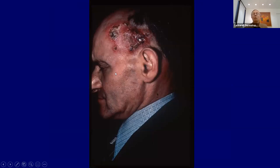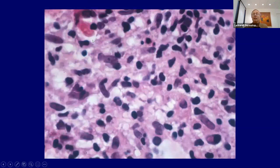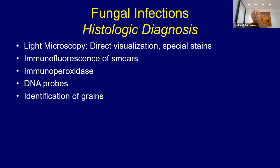Tertiary syphilis is not commonly seen. In some HIV-infected patients, they can have weird manifestations — primary, secondary, and tertiary lesions all at the same time because their immune system responds unusually. You get a relatively nonspecific dense diffuse infiltrate with histiocytes and a lot of plasma cells. A special stain will often show spirochetes there as well.